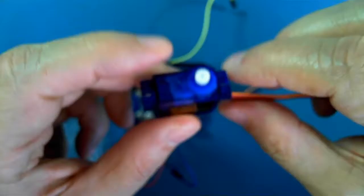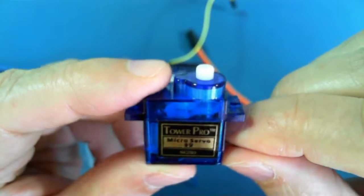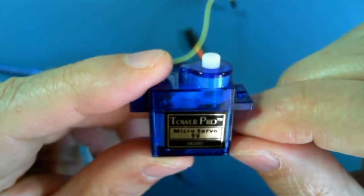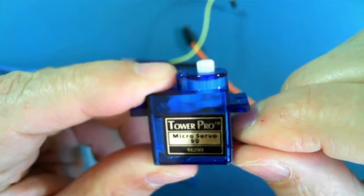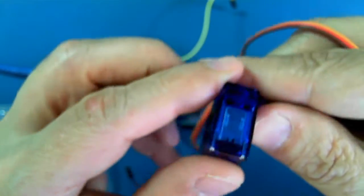Servos are characterized usually by the amount of torque they can put out. It says this is capable of 9 G's. Now it's hard to know whether that's correct. It seems like a pretty small one.